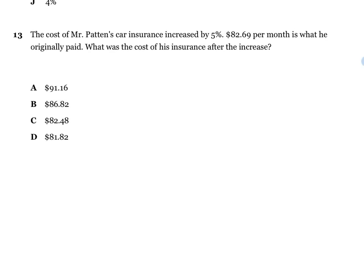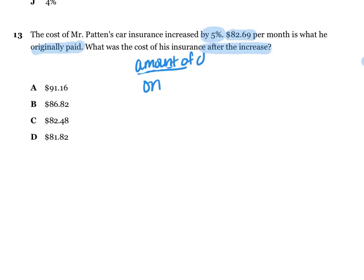The last one: the cost of Mr. Patton's car insurance increased by 5%. He originally paid $82.69 per month. What was the cost of his insurance after the increase? We're actually going to go with amount of change — some of you may see it as new amount. You're going to go: amount of change over original equals percent over 100. You're still going to have to do other steps after that.